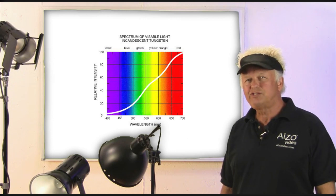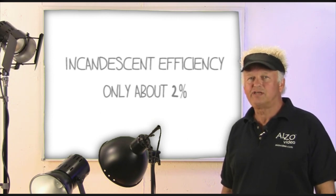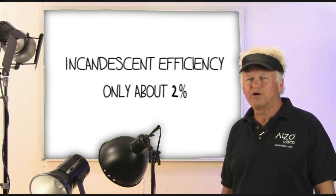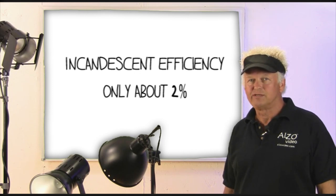Because of all the heat generated, the efficiency of incandescent light is very poor at about 2%. Most governments are working to ban the sale of incandescent lights.